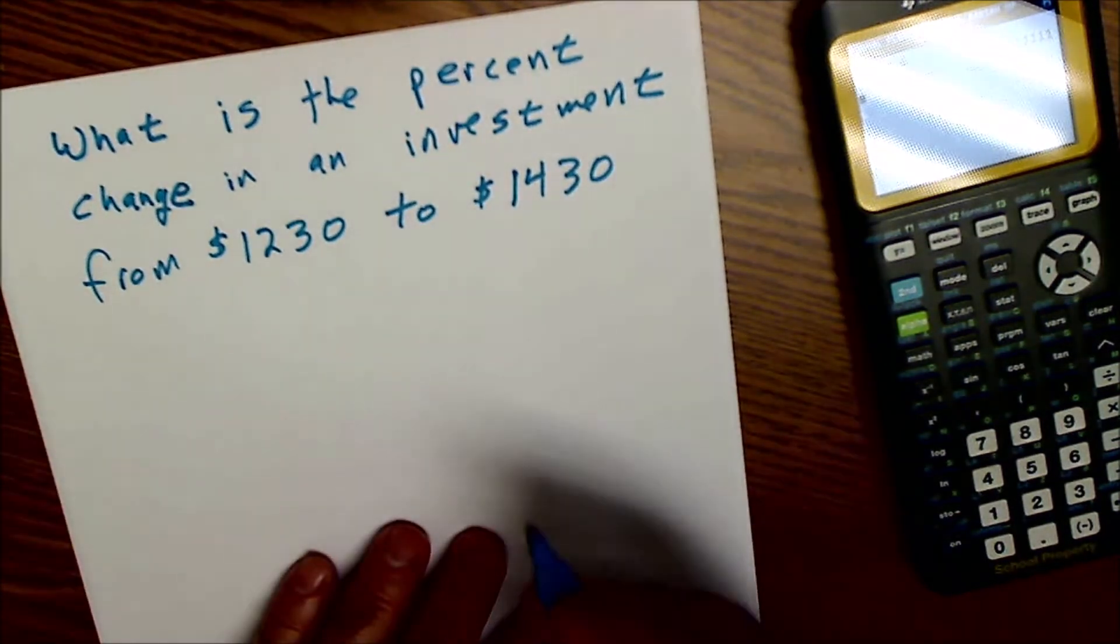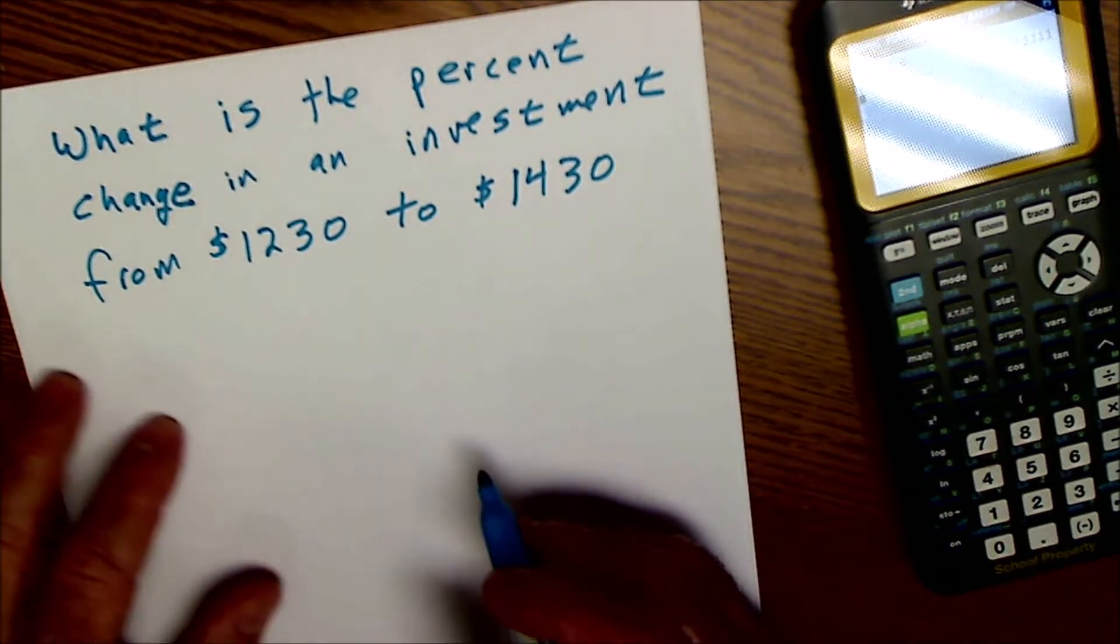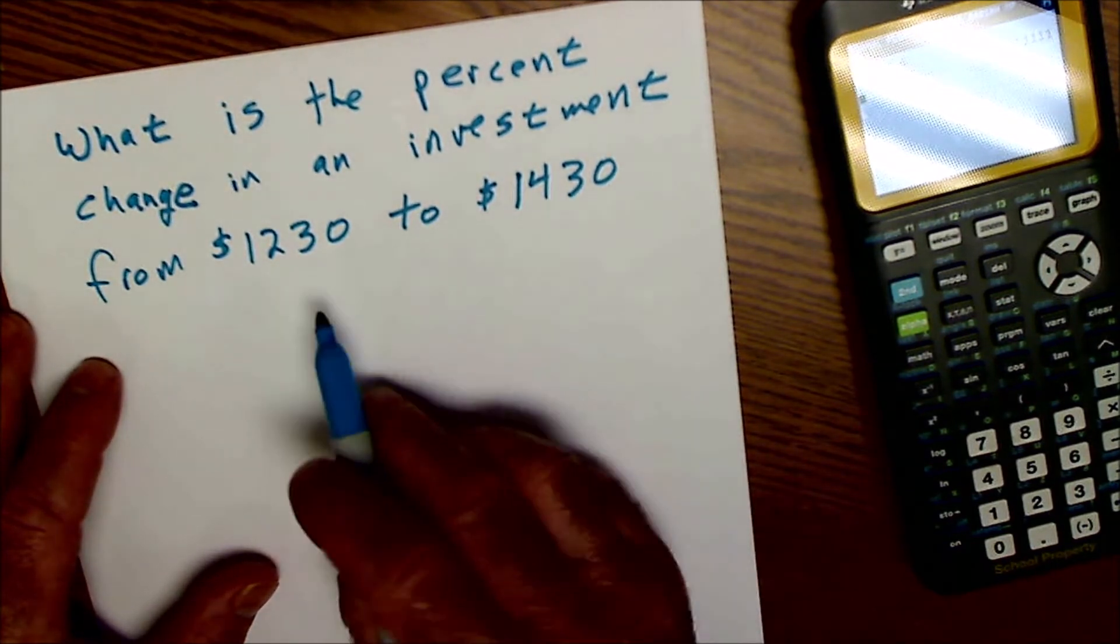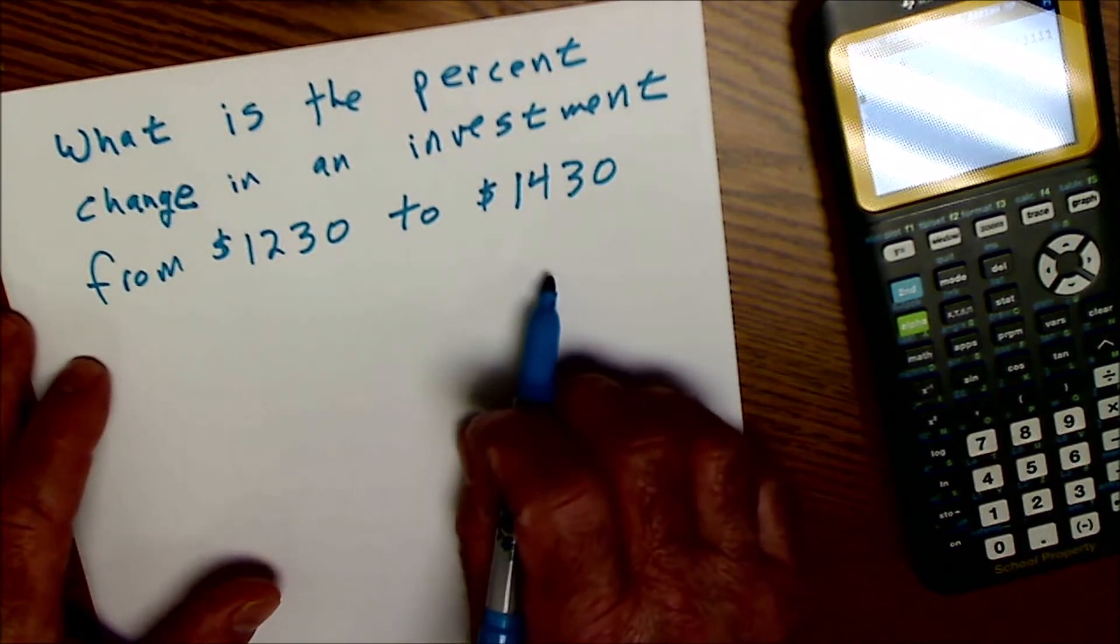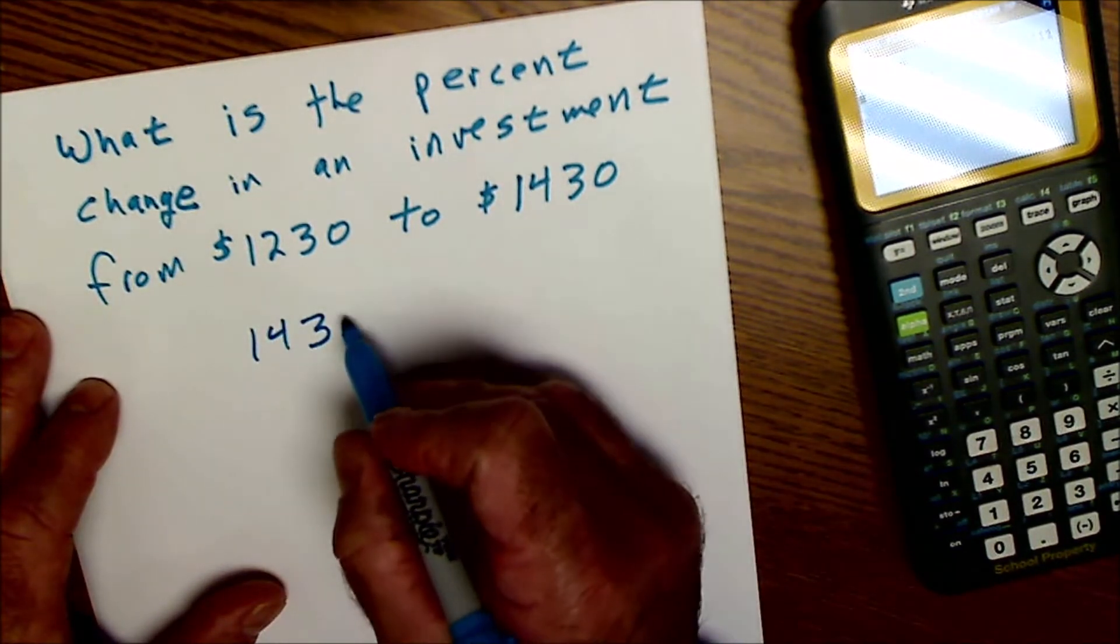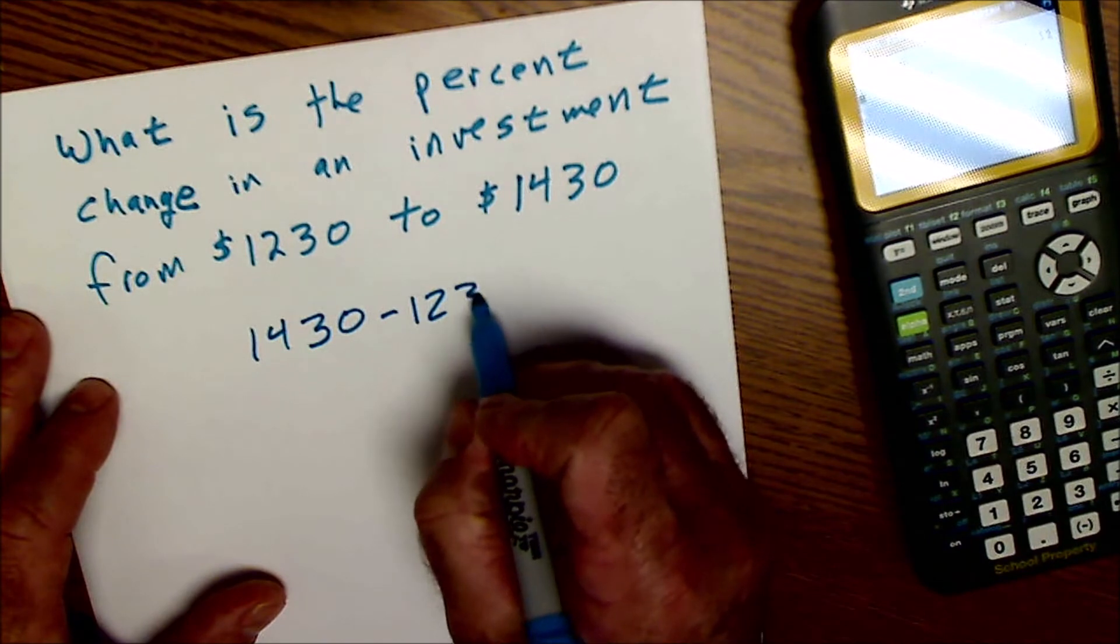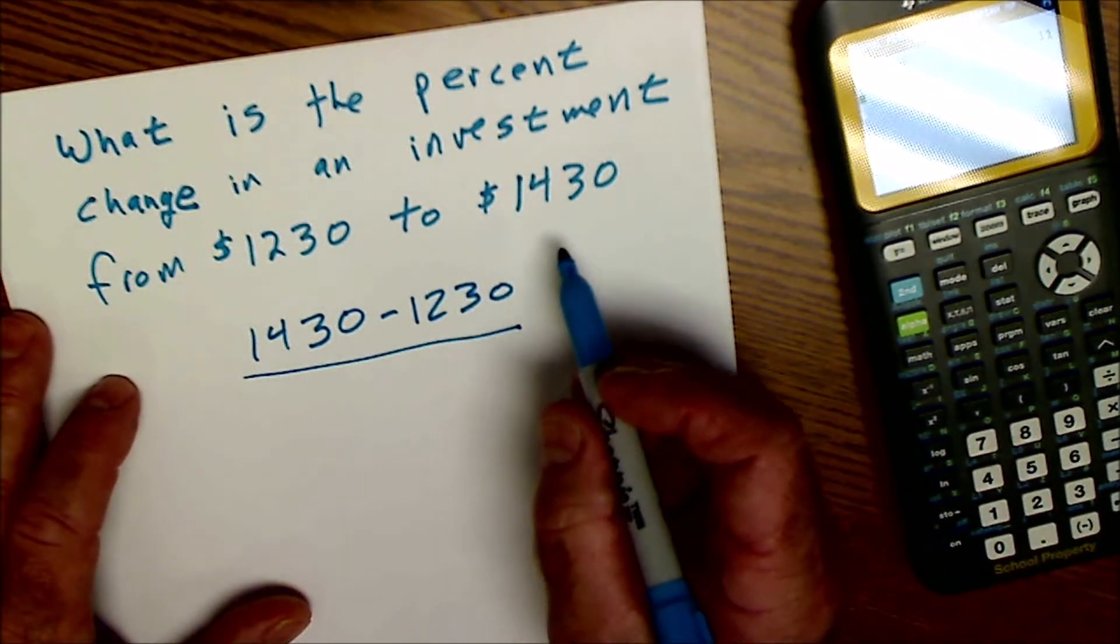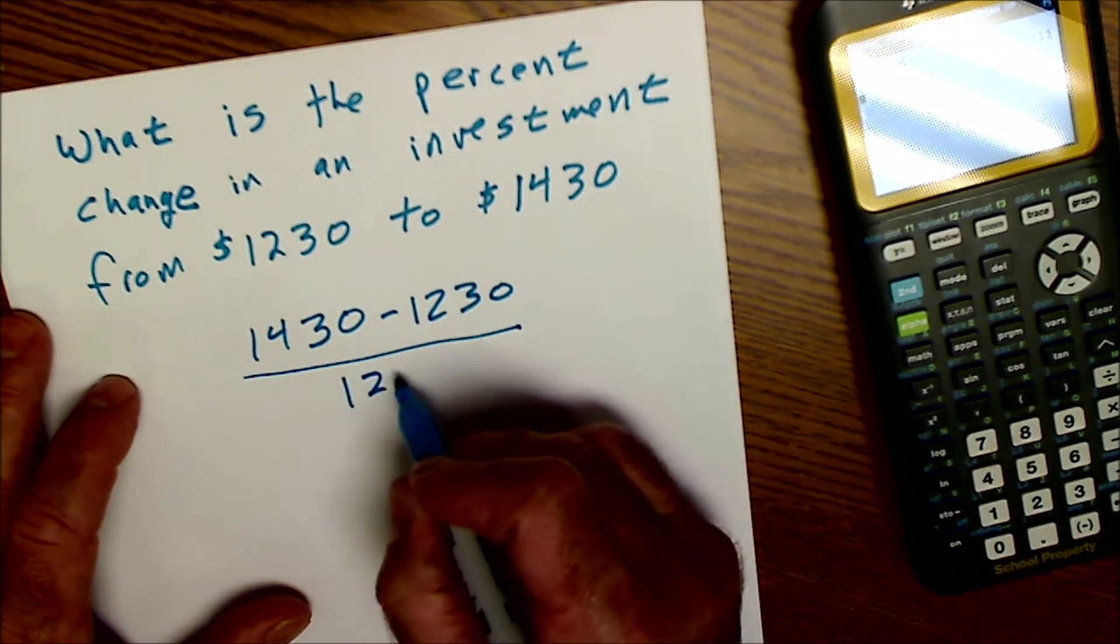Here's another investment problem. Let's do this one. Again, pause the video and try it. What is the percent change in investment from $1,230 to $1,430? So I'm going to do $1,430 minus $1,230. That'll give me the amount of difference divided by the original amount, $1,230.